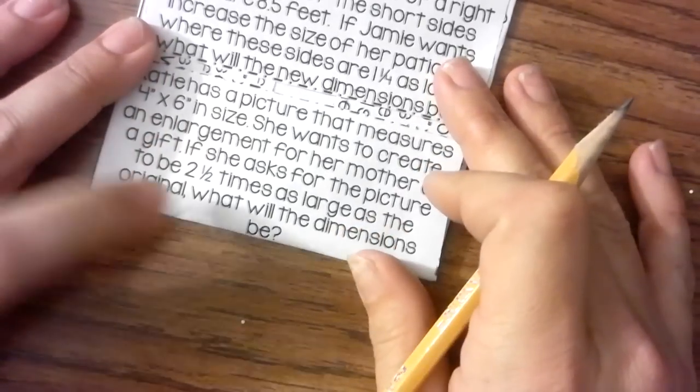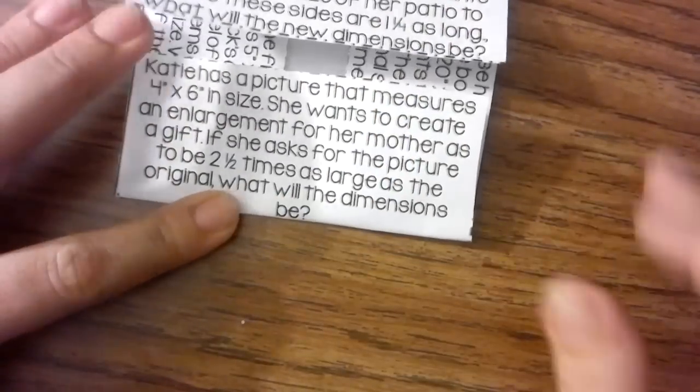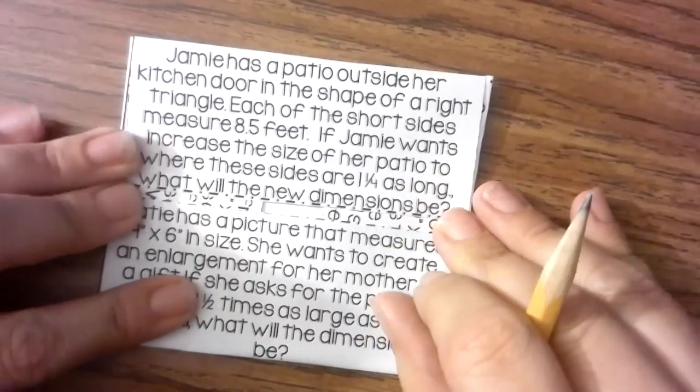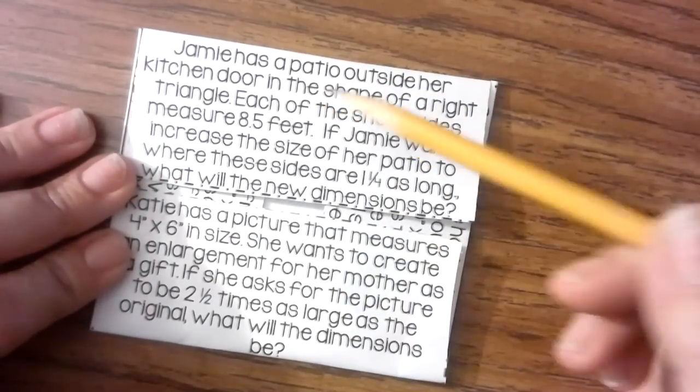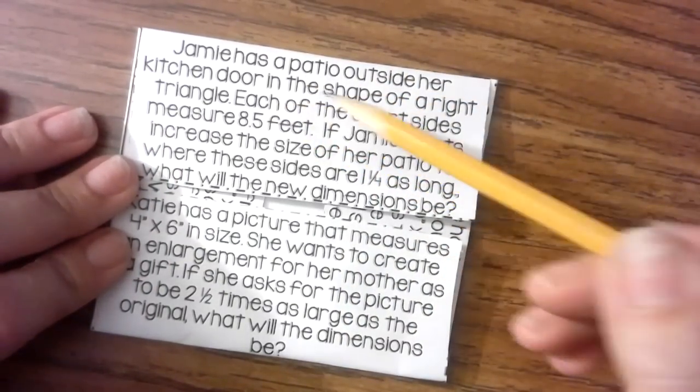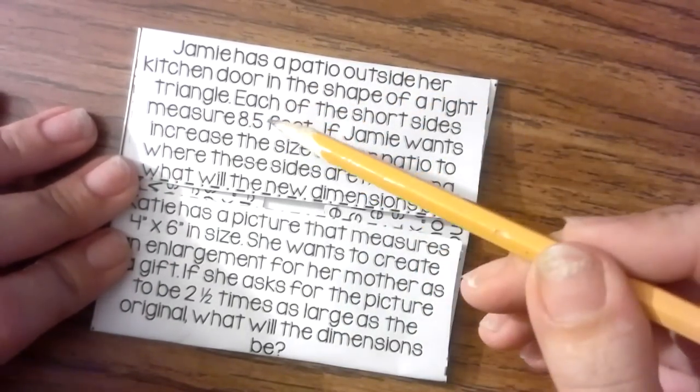Okay, so we may have these examples done already but I'm going to go ahead and do them again. Jamie has a patio outside her kitchen door in the shape of a right triangle.